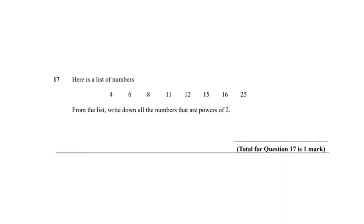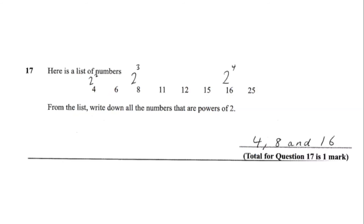Question number 17, here is a list of numbers: 4, 6, 8, 11, 12, 15, 16 and 25. From this list, write down all the numbers that are a power of 2. So 4, 8 and 16 should have been your answer.